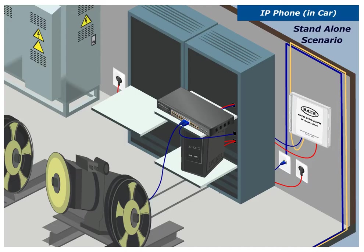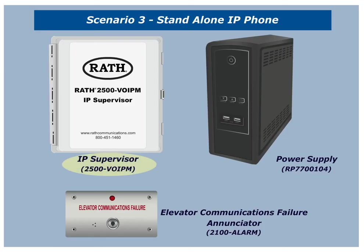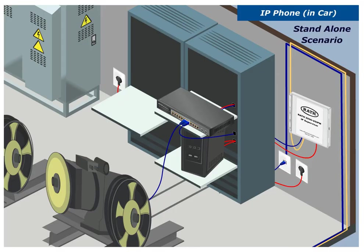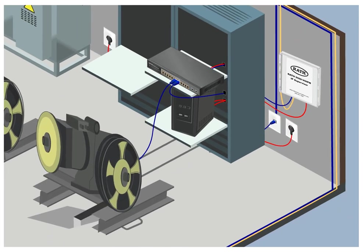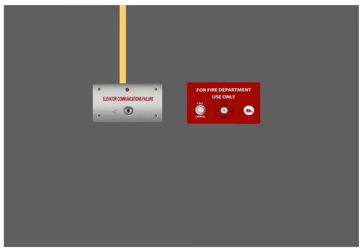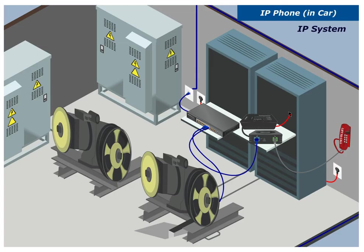Scenario Number 3: Stand-alone IP phone. Take the CAT 5E run up the travel cable to the PoE Plus connection on the network switch. Connect the 2500 VOIP-M utilizing an Ethernet cable. This pings all of the IP elevator phones on the network to ensure functioning communication pathways. Plug the power connection of the 2500 VOIP-M to the RP7700104. Run the relay contact of the 2500 VOIP-M to the 2100 alarm.